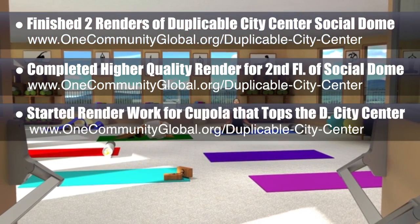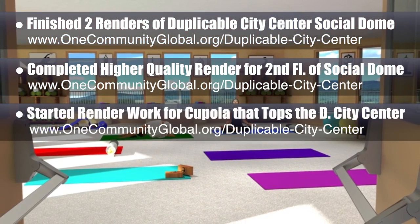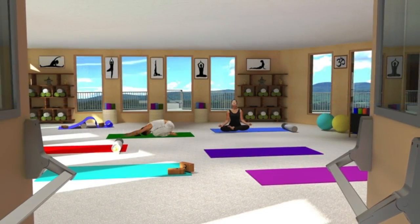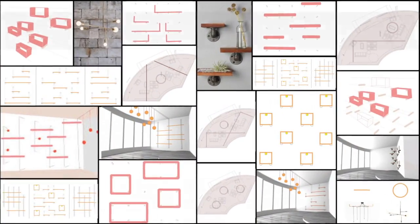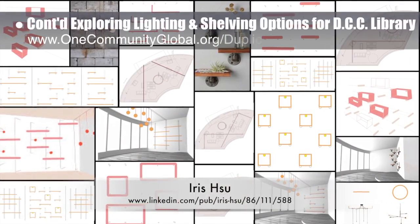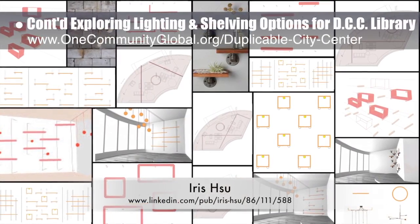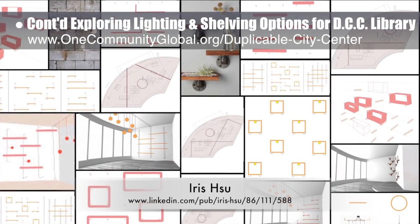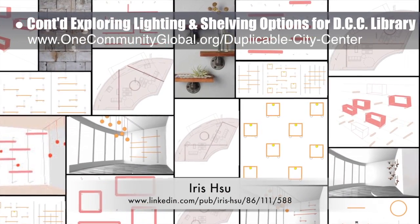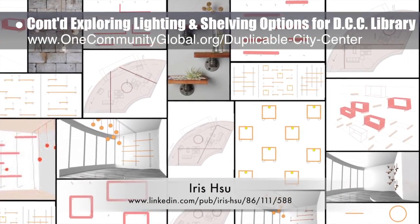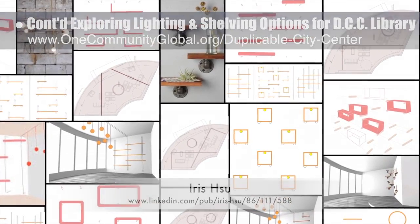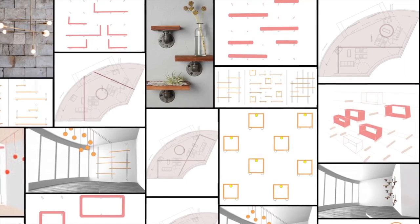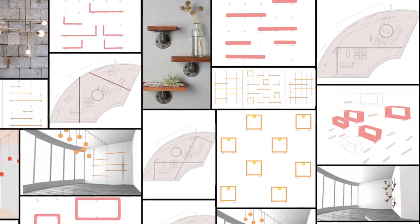This week's focus on the cupola included designing scene selection, addition and placement of scene-relevant components, and setting up textures, lights, and shadows. Iris Hsu, industrial designer, also continued exploring lighting and shelving options for the duplicable city center library. What you see here is round two of this research, exploration, and design outlining for open source and do-it-yourself lighting and shelving that will go with the DIY pipe furniture chairs and couches Iris designed already for this social and recreation space.